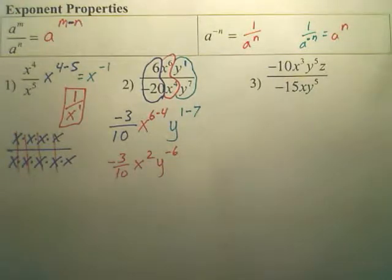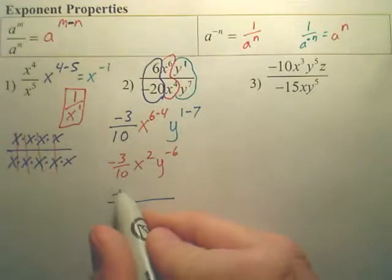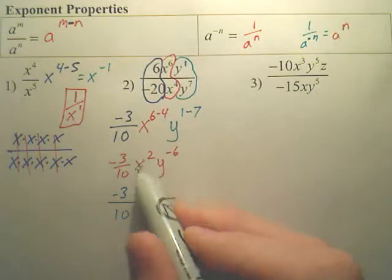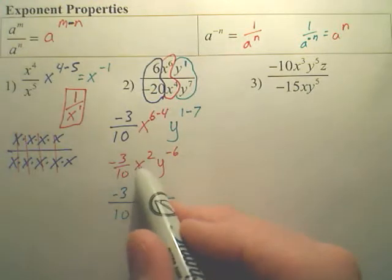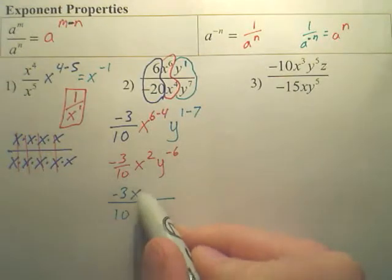Now, we're not allowed negative powers. So here's how my final answer looks. I put the negative 3, the 10 on the bottom. Now, this x squared, is this an x squared on the bottom or top of a fraction? Wasn't this x squared over 1? So wouldn't the x squared be on top with the 3?